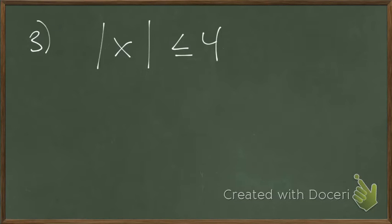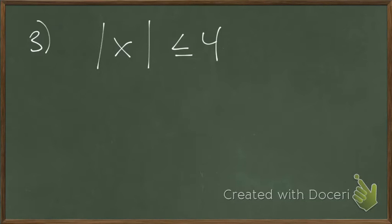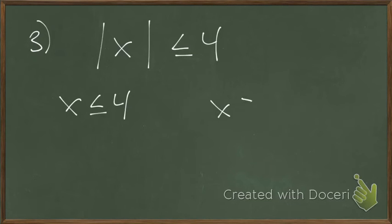4 would work — 4 is less than or equal to 4. What about negative 4? Yes, because the absolute value of negative 4 is 4, and 4 equals 4. Does 5 work? No, 5 isn't less than 4. Does 3 work? Yes. So this is going to help me make my two inequalities: x has to be less than or equal to 4, but x also has to be greater than or equal to negative 4.